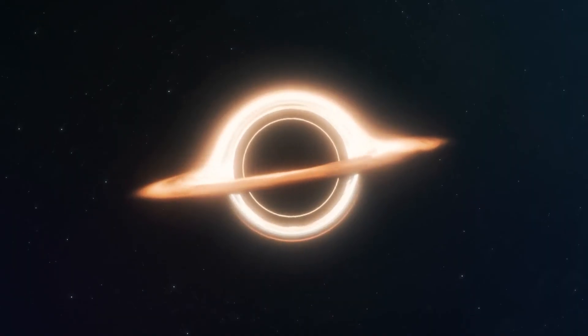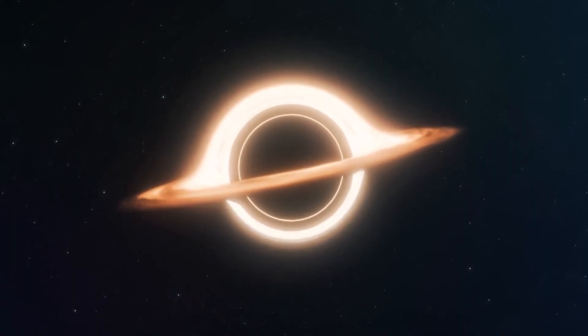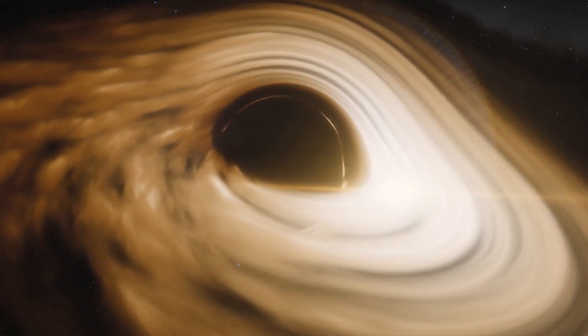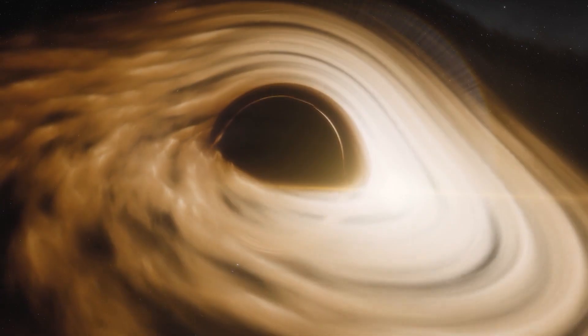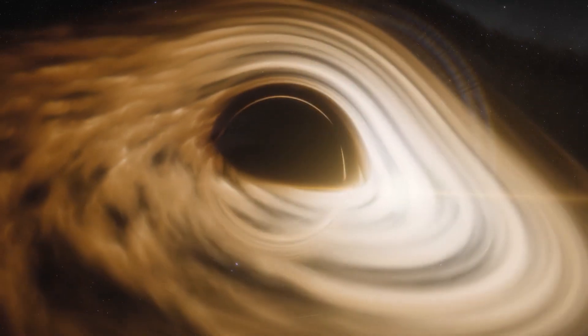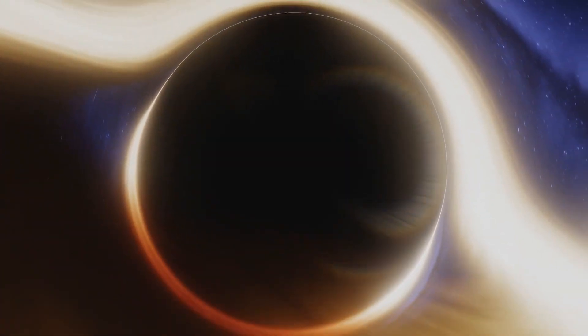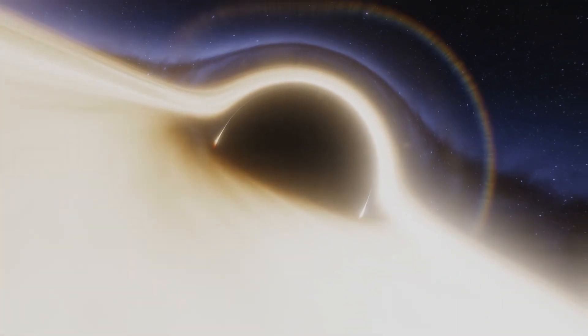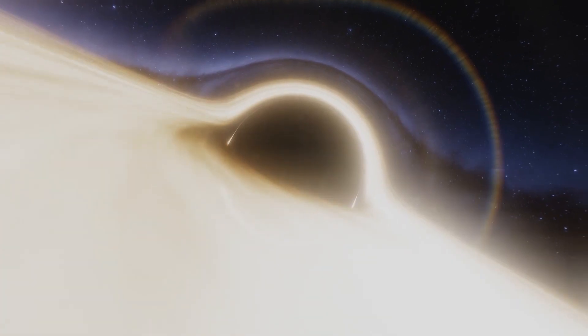Supermassive black holes play a crucial role in the evolution and dynamics of galaxies. When matter gets too close to them, it forms an accretion disk that emits intense radiation. The gravitational interactions between the black hole and surrounding stars create the brighter point of concentration observed in Andromeda's AGN.